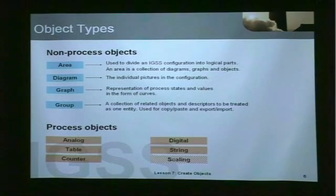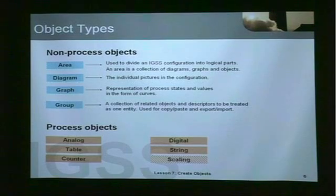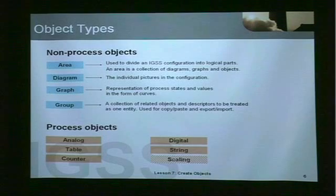Object types. Area, diagram, graph, and group are present in every configuration. These are used to logically divide the configuration and to control it from a system point of view — they are always present. At the bottom, we have the process objects themselves: analog, digital, table, string, counter, or scaling. We've looked at these objects before, so I'm not going to go into further detail about them.